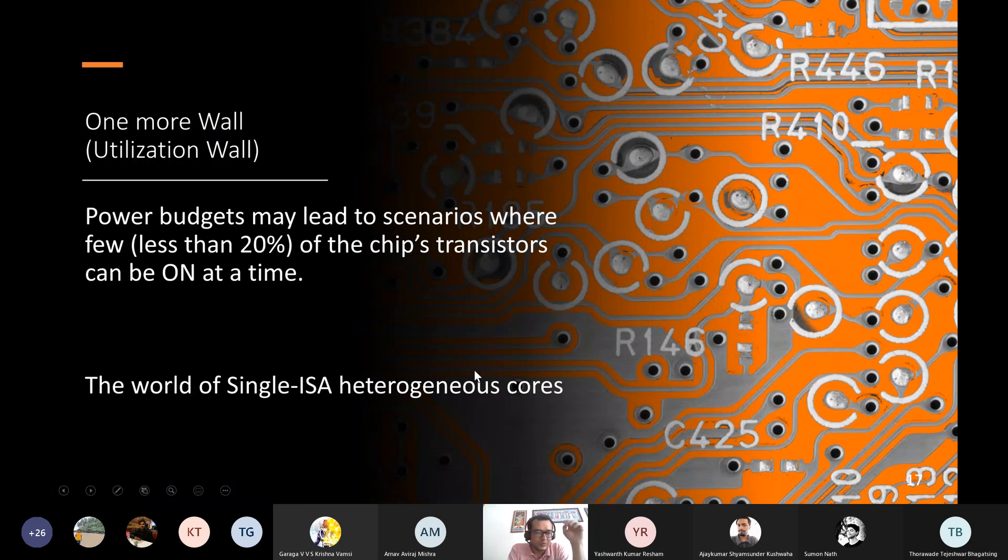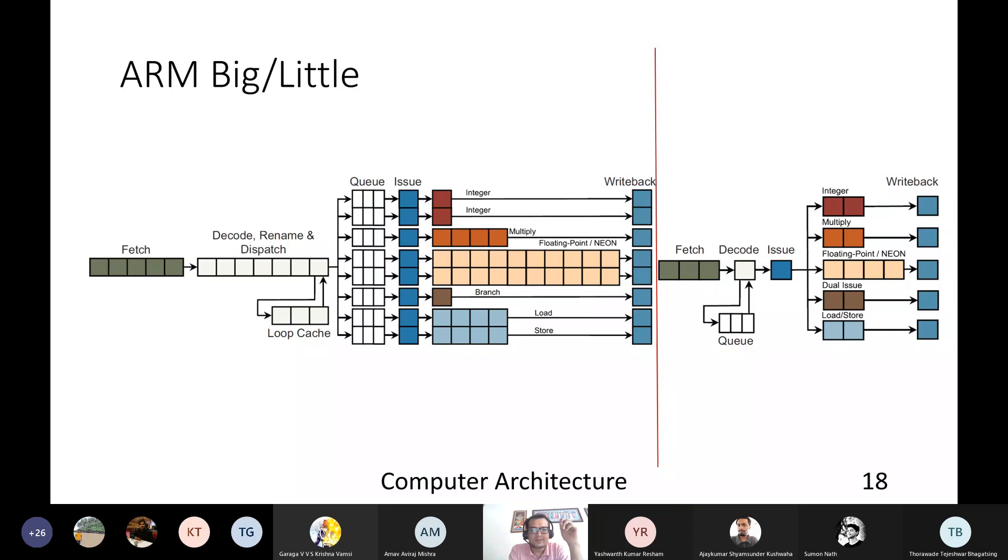So because of this particular problem, the community jumped into a new way of designing processor, which is single ISA heterogeneous processor. And the idea was can we have a single ISA, let's say ARM or x86, which will be used by heterogeneous processors. Some are power efficient, some are performance efficient. So this is one example from ARM. The left side is ARM big processor and the right side is the little processor. The difference between ARM big and little is in terms of ISA both are the same, but in terms of microarchitecture, they're completely different. This is a deeper pipeline, more microarchitecture optimizations. Here there are hardly anything.